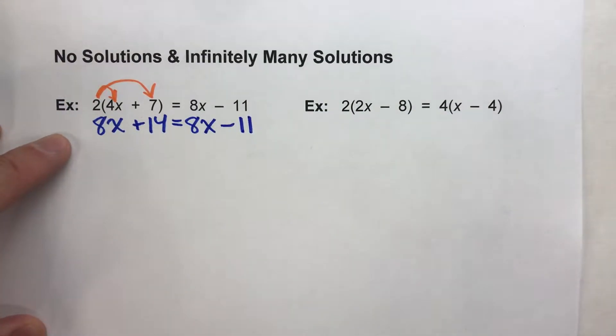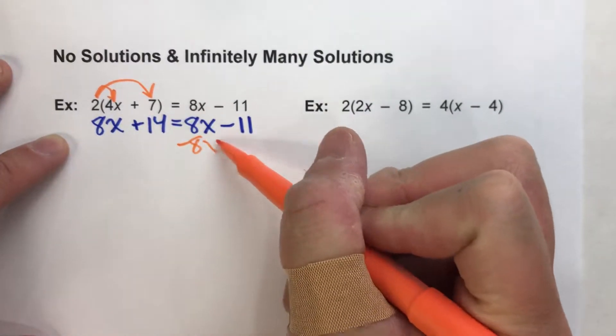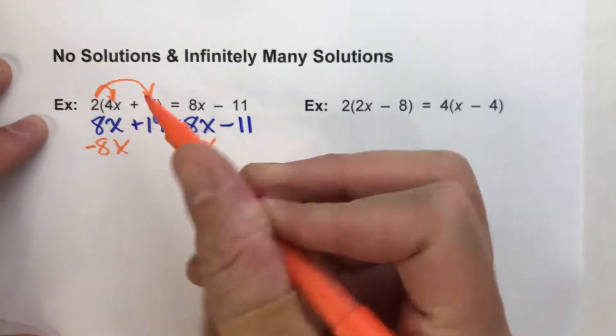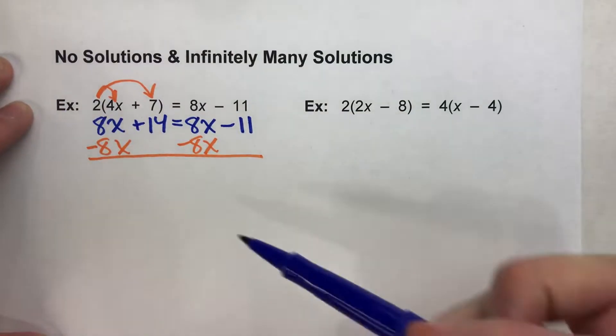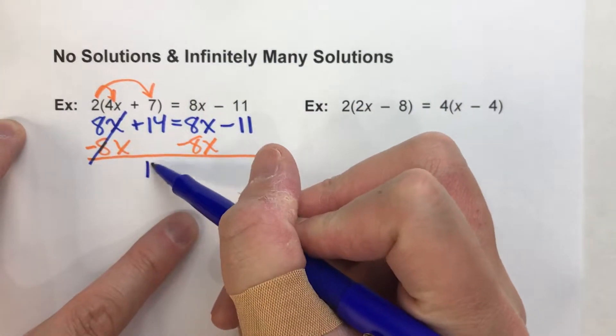Now, I've got x's on both sides of the equal sign. So I'm going to subtract 8x. But what I do to one side of the equal sign, I have to do to the other side. Now, when I do this, the 8x's undo each other and all that's left over here is 14.